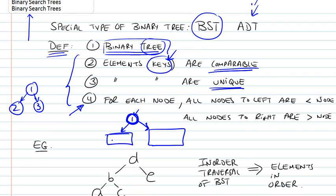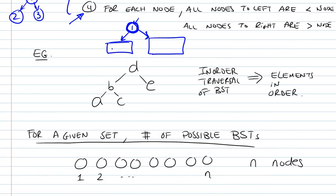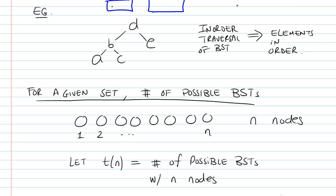This is why they call it binary search tree - there's a search element to it. If you remember binary search with a linear list, we were exploiting the fact that the list was sorted, which allowed us to divide the list in halves and keep looking for an element.